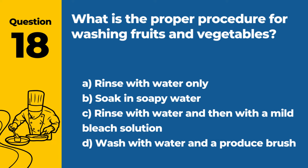Question 18. What is the proper procedure for washing fruits and vegetables? a. Rinse with water only. b. Soak in soapy water. c. Rinse with water and then with a mild bleach solution. d. Wash with water and a produce brush. Answer a. Rinse with water only. Fruits and vegetables should be thoroughly rinsed with water to remove dirt and contaminants.